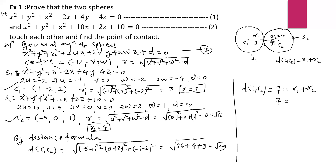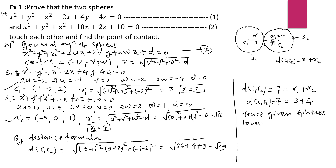The distance between the centres is 7, which equals r1 + r2 = 3 + 4 = 7. Hence the distance between the centres equals the sum of their radii, and therefore the given spheres touch each other.